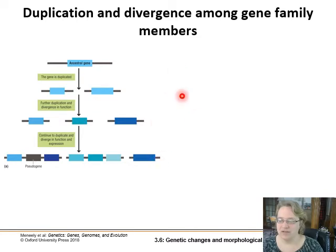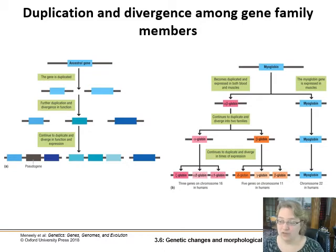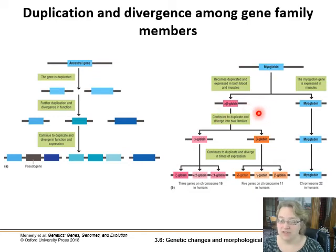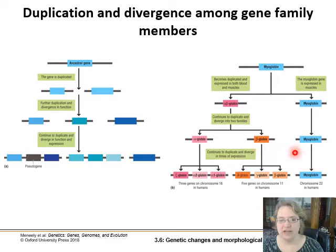An example of this in humans is myoglobin. The ancestral gene has been duplicated and copied multiple times. We still have the original myoglobin gene expressed in muscles, but at some point there was a duplication and this particular globin is now expressed in blood. That duplicated again and diverged into two families: our alpha globins and our beta globins. There are actually three alpha globin genes on chromosome 16, five beta globin family genes on chromosome 11, and myoglobin, the original ancestral gene, on chromosome 22.